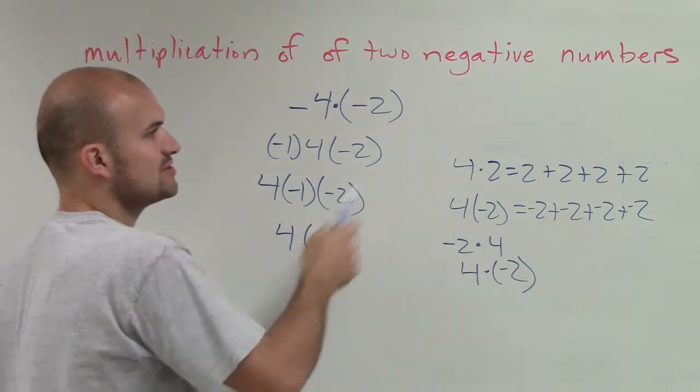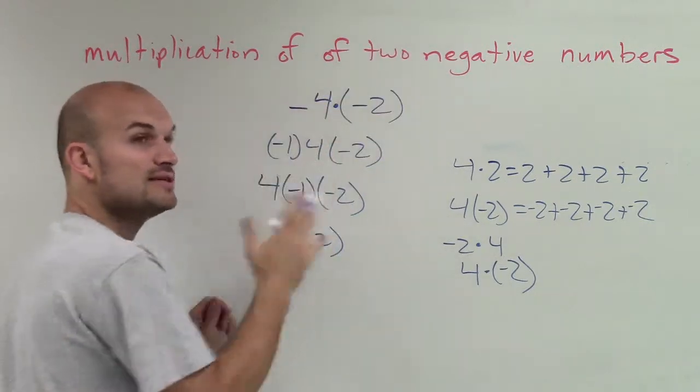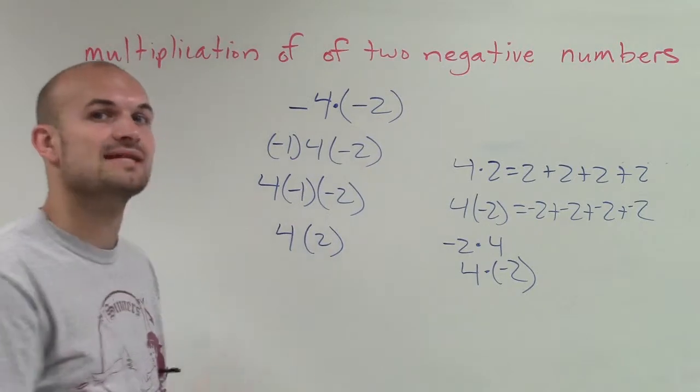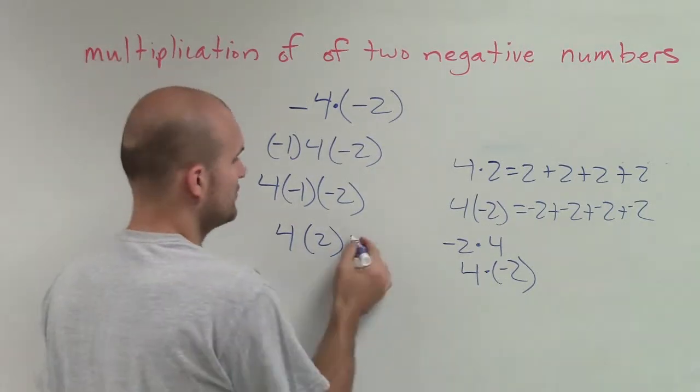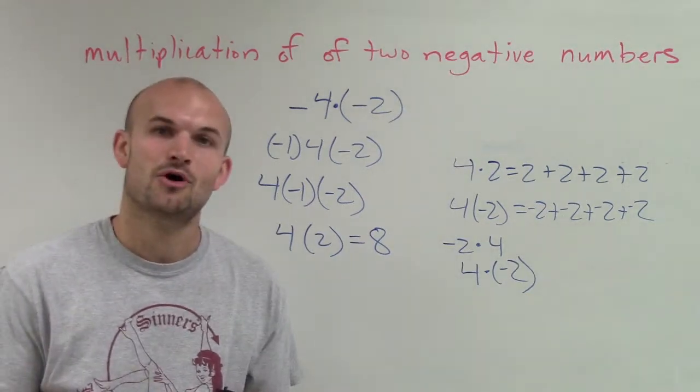So 4 times 2 would be equivalent to negative 4 times negative 2. By using my properties, it's the same thing as 4 times 2. So negative times a negative is always going to give you a positive, which in this case is positive 8. So there you go. Hope that helped.